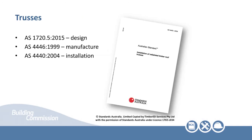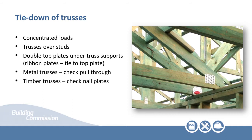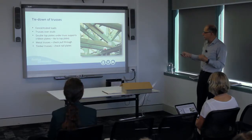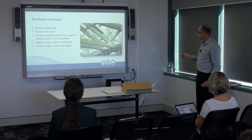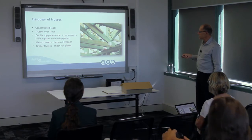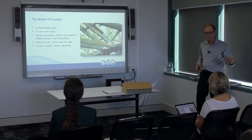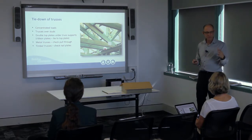For trusses: trusses are designed to AS1720.5 and manufactured to that standard, but builders have to install them to that standard too. Truss manufacturers give great information on how to temporarily brace them, how the final bracing has to look, and what tie-downs are required. Trusses concentrate loads — all of the uplift load on a panel of roof is carried down to the edge of the truss and has to be anchored at that point. As we go through the structure, we get more and more concentration of loads, so a large tributary area's load has to pass through one connection point. Most truss manufacturers put an arrow where the support points are, making it easy to check they're in the right place.